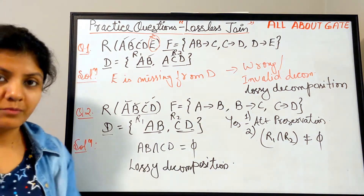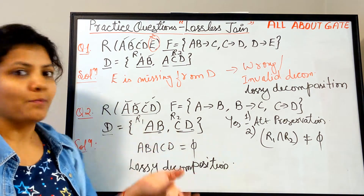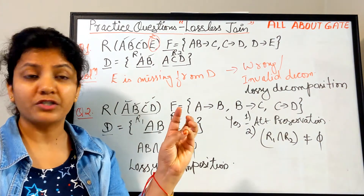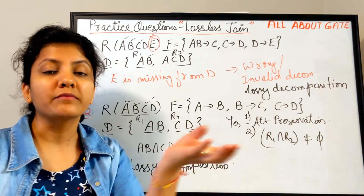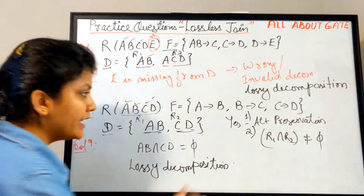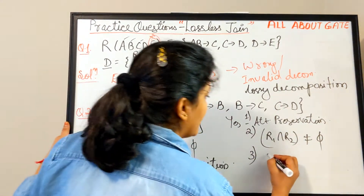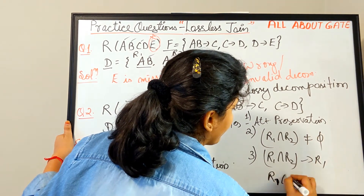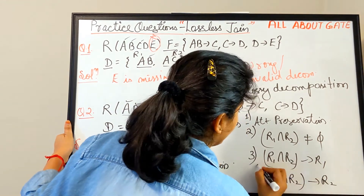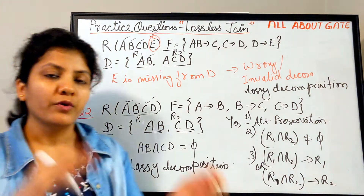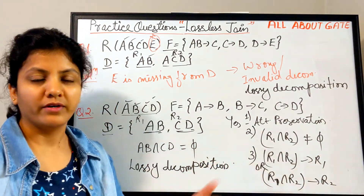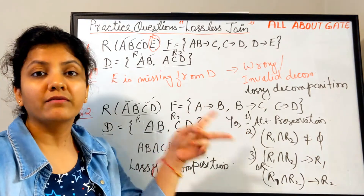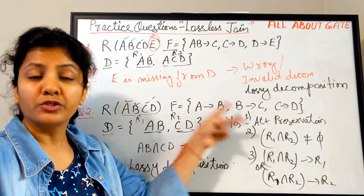Both examples were intentionally lossy to make you understand the importance of: first, attribute preservation; second, there must be something common between R1 and R2. Then we check the third condition — R1 ∩ R2 should either determine R1 or determine R2. This third condition we will see in the next question. These first two are primary requirements that must be checked first.